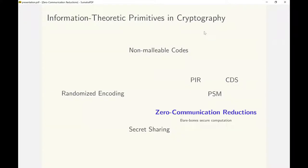ZCR ties together various other primitives like CDS, private simultaneous messages protocols or PSM, and secure two-party computation. It yields new upper bounds and lower bounds for them and also leads us to new open problems and directions.